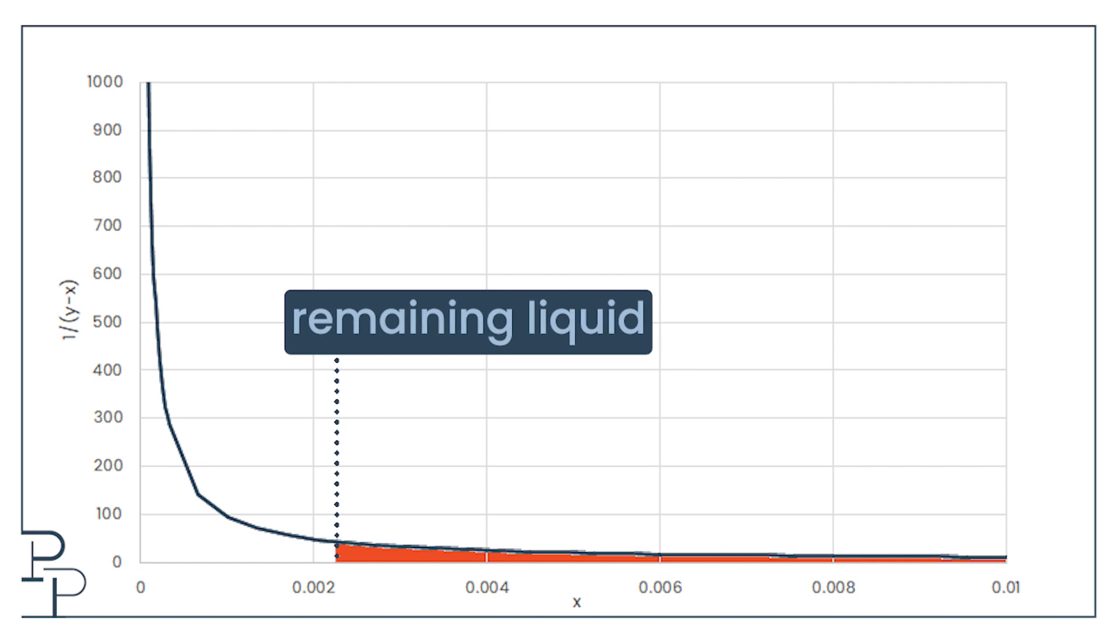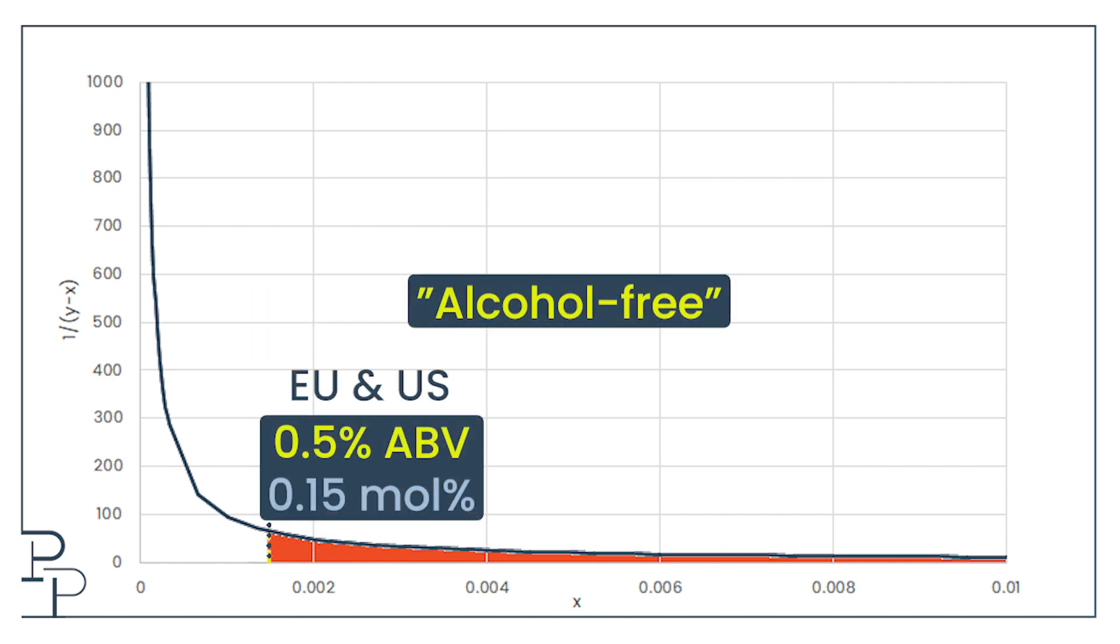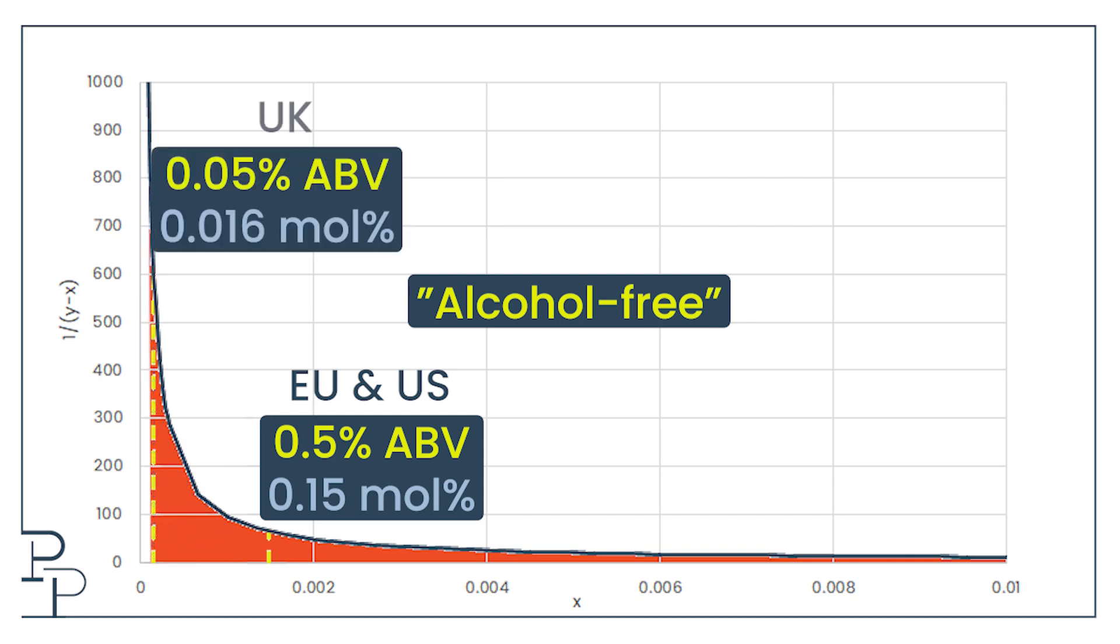Take as an example Europe and the US. An alcohol-free beer is one with an alcohol by volume of less than 0.5%. That's over here. In the UK, alcohol-free means less than 0.05% over here.